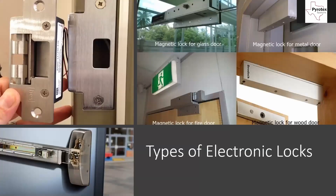Starting in the bottom left: that picture is a crash bar. Crash bars can have nothing to do with electronic locks — you walk up, push the bar, and the door opens whether it's locked or not. It's a good means of free egress from the building with nothing impeding it.